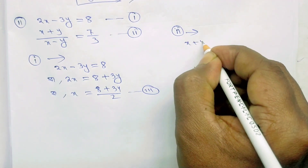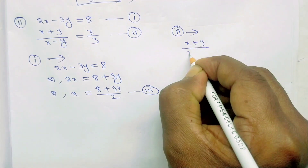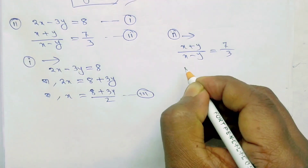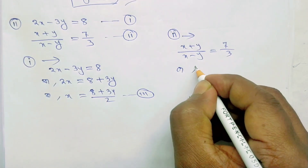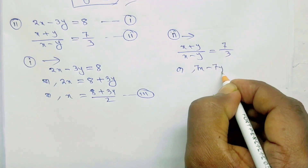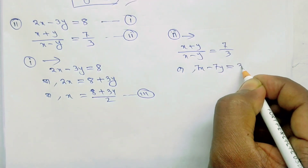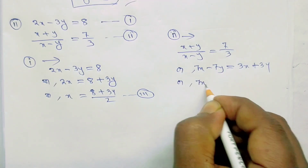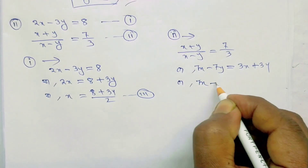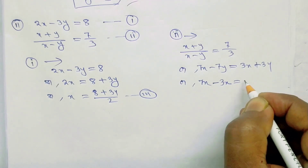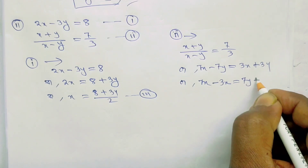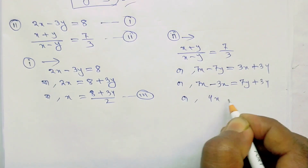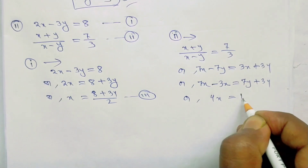x plus y by x minus y equals 7 by 3. Now, 7x minus 7y equals 3x plus 3y. Now, 7x minus 3x equals 3y plus 7y.